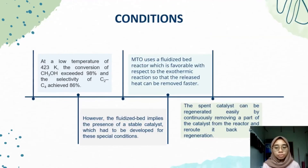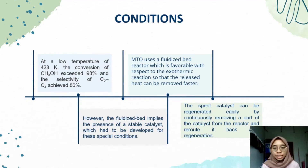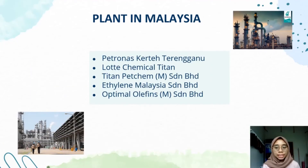The reaction conditions show that at a low temperature of 423 Kelvin, the conversion of methanol exceeds 98% and the selectivity of ethylene achieves 86%. This reaction is favorable with respect to the exothermic reaction so that the released heat can be removed faster. This is a plant in Malaysia that produces ethylene.